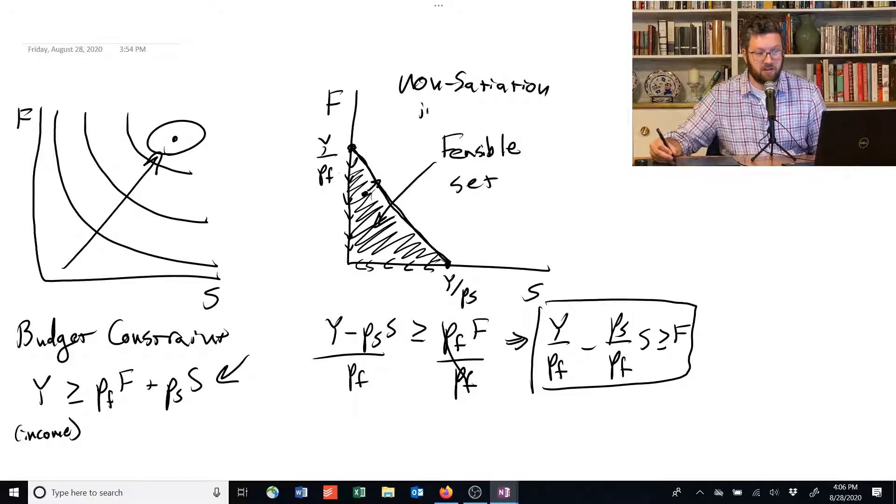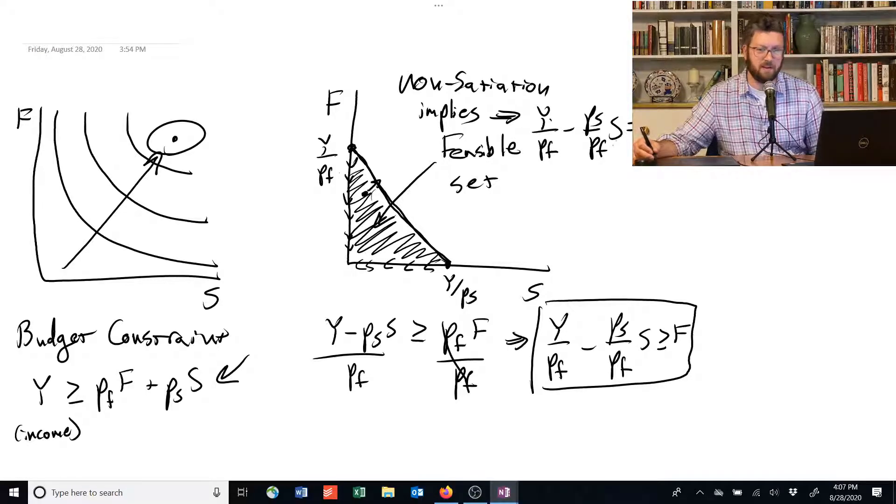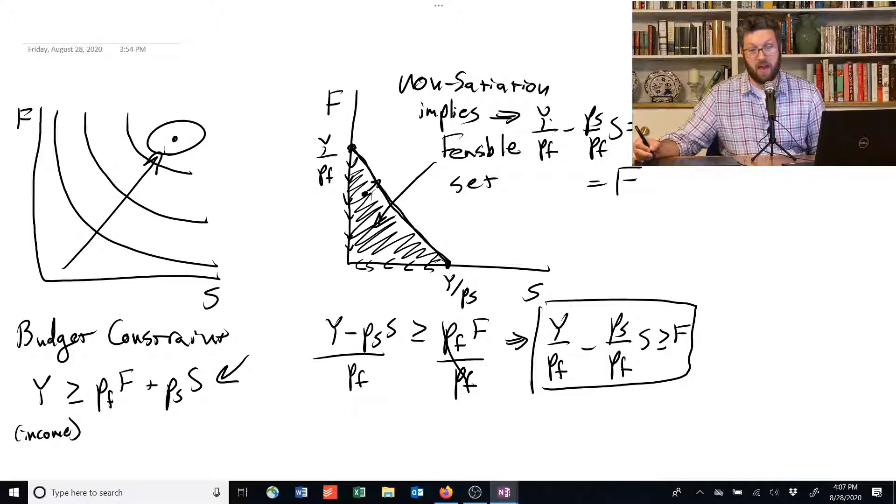And so you wouldn't want to do that. You'd keep spending more of it. So non-satiation implies that you're going to be on the edge here. And that implies that this budget constraint is binding. What does that mean? We can replace this greater than or equal to with just an equal to. You're going to spend all your money. I see I covered myself up here. This is saying equals F.